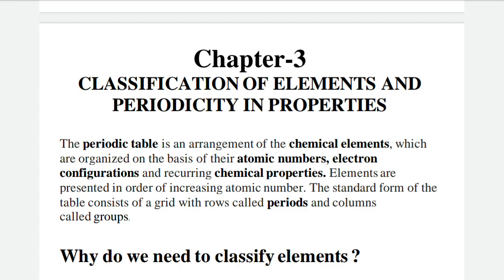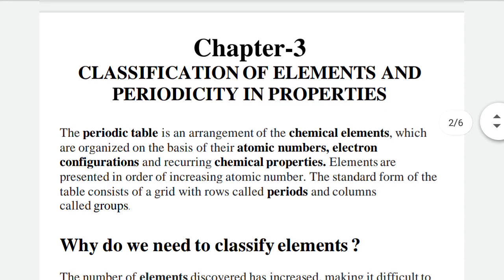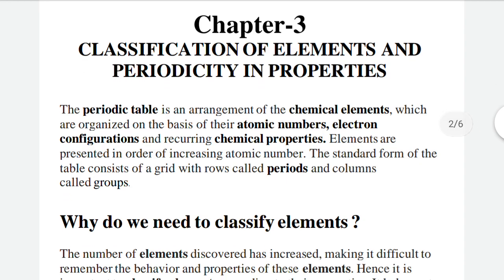The elements are presented in order of increasing atomic number. The standard form of the table consists of a grid with rows and columns — the rows we call periods and the columns we call groups.